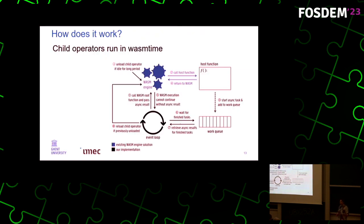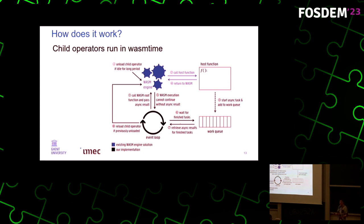So how does this loading and unloading work? This is the WebAssembly engine — basically just WASM time. Inside here your child operator is running. Once the child operator wants to contact the Kubernetes API server, it does a syscall. We extended the WebAssembly system interface to add a few syscalls to support this scenario. This syscall goes through to the parent operator, and then the parent operator is the one who actually contacts the Kubernetes API. Once these calls are finished, the parent operator contacts the child operator back again to give it the result. And if the child operator is not doing anything, the parent operator shuts it down, and once there are changes to process, it starts it up again.